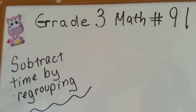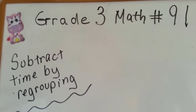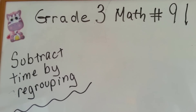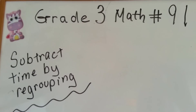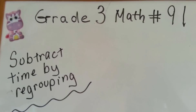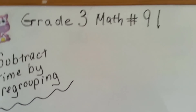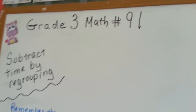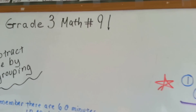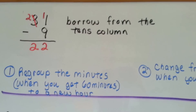Grade 3 math number 91: subtract time by regrouping. We added time by regrouping in the last video. Now we're going to subtract time.